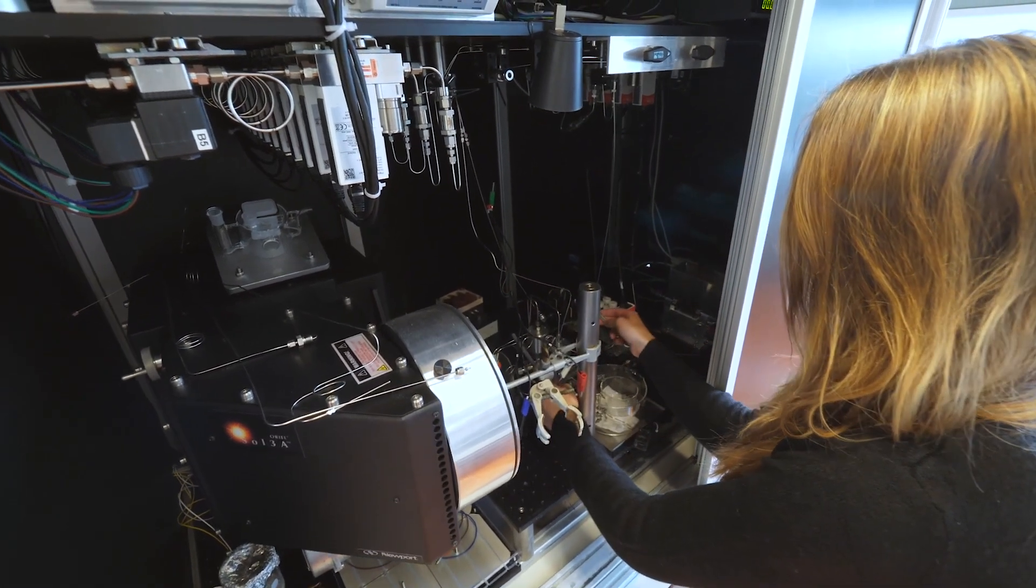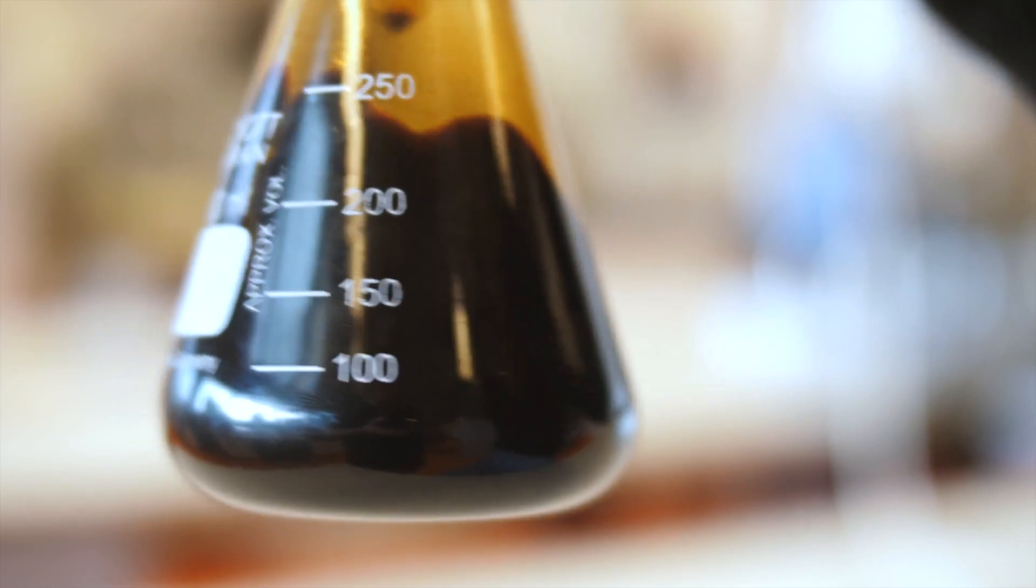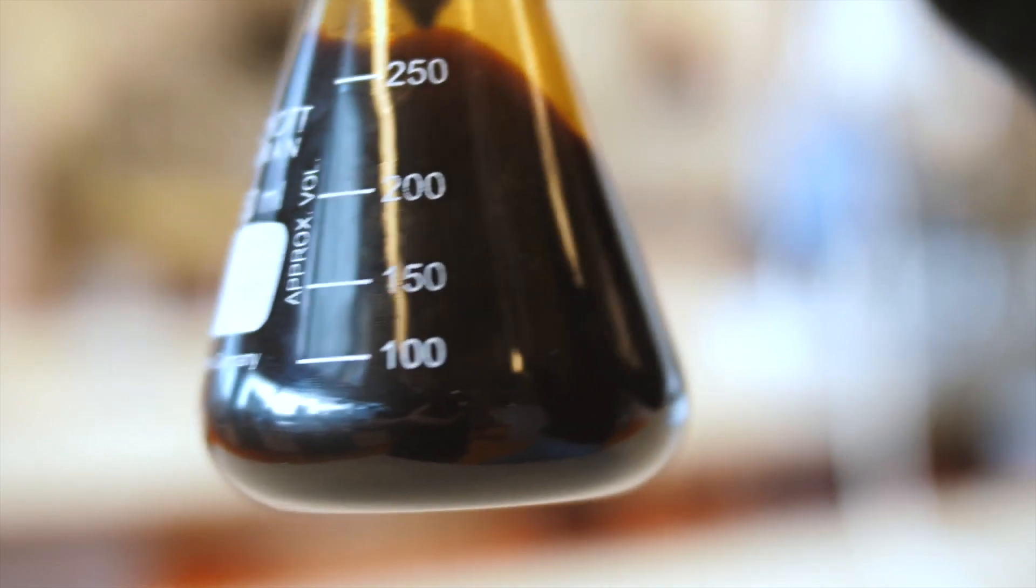This black box produces a sustainable fuel from CO2. Right now, society mainly uses fossil fuels to produce our chemicals, fuels, and electricity - basically all synthetic products we use every day. By burning fossil fuels, carbon dioxide is released and we're rapidly warming up the earth.